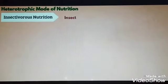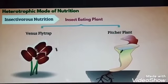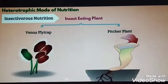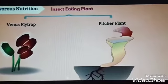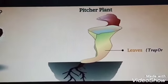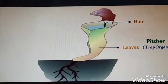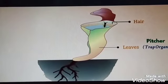Insectivorous Nutrition: Insectivorous plants like algae traps and pitcher plants colourfully attract insects. Parts of the body such as lips form trap organs like pitchers which help in catching insects. The hairs present in the pitcher do not let the insect escape. With the help of digestive juices, they digest the food and obtain nutrients from it.